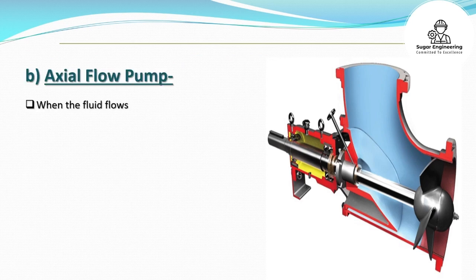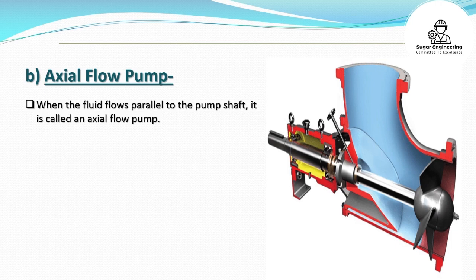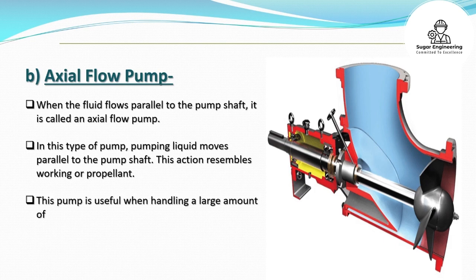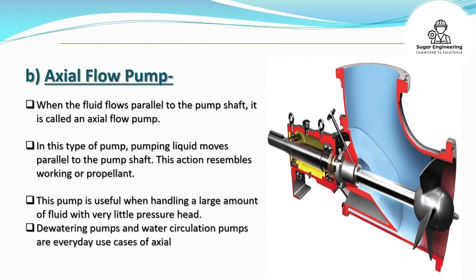B. Axial flow pump. When the fluid flows parallel to the pump shaft, it is called an axial flow pump. The pumping liquid moves parallel to the pump shaft, resembling the working of a propeller. This pump is useful when handling a large amount of fluid with very little pressure head. Watering pumps and water circulation pumps are everyday use cases of axial flow pumps.